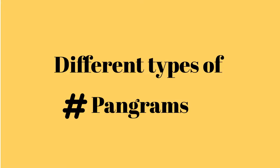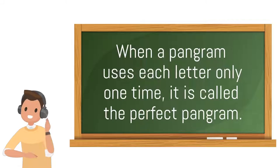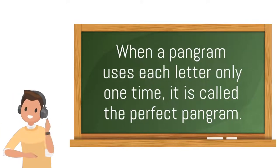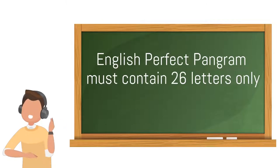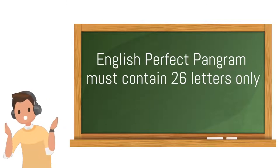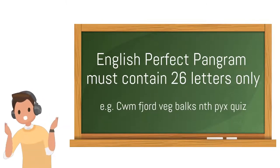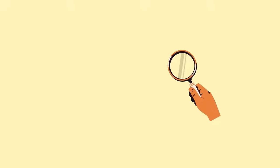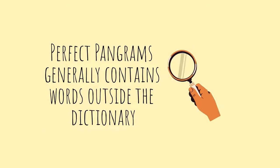Now here are some different types of pangrams. First, perfect pangrams. When a pangram uses each letter only one time, it is called a perfect pangram. That means to create a perfect English pangram, you need to use all 26 letters, and the sentence must contain exactly 26 letters only. Perfect pangrams are very rare and generally contain words outside the dictionary.